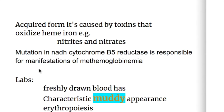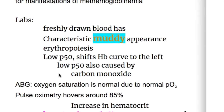In the acquired form, mutation in NADH cytochrome B5 reductase is also responsible for the manifestations of methemoglobinemia. The lab features of methemoglobinemia include: freshly drawn blood has a characteristic muddy appearance, there is erythropoiesis, and there is low P50. The low P50 shifts the oxygen-hemoglobin curve to the left. Low P50 is also caused by carbon monoxide poisoning.